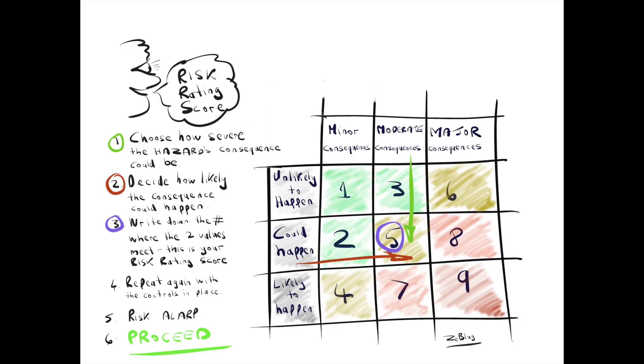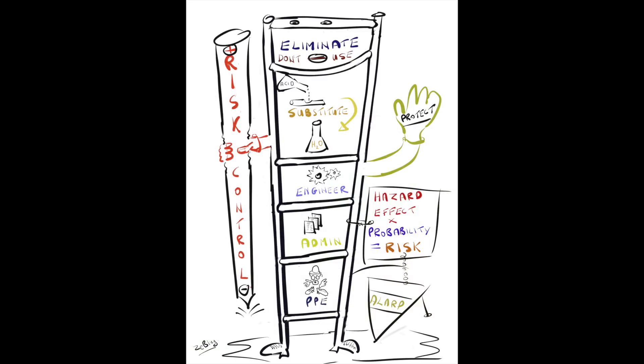A risk hierarchy of control is then considered to determine the actions required to bring risks as low as reasonably practicable. It should be remembered that elimination and substitution controls remove or reduce the hazardous energy effect at source. All other forms of control only reduce the probability of the consequence happening — the energy is still there.